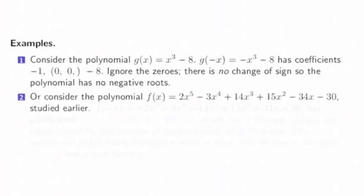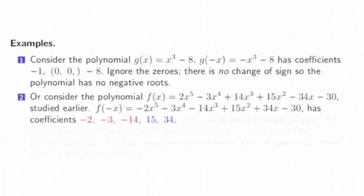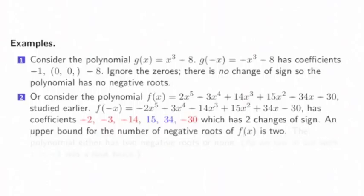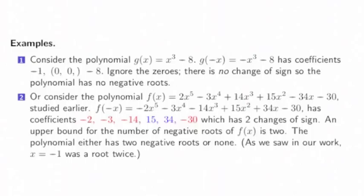Consider the polynomial, the fifth degree one we did before. If I plug in -x, I get this one. And it has coefficients -2, -3, -14, then 15, 34, we've changed sign there, then -30, we've changed sign again. It has two changes in sign. An upper bound for the number of negative roots is 2. So the polynomial either has two negative roots or possibly two disappearing pairs, so maybe it has no negative roots. It has two or zero negative roots. As we saw earlier, -1 happened to be a root twice.